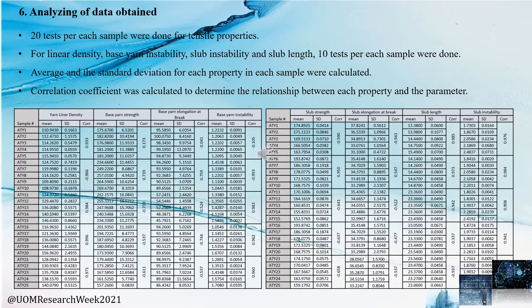To measure tensile properties, we conducted over 20 tests per each sample. For linear density, base instability, slab instability, and slab length, multiple tests per sample were also carried out. The average and standard deviation of each property were calculated, and the correlation coefficient was calculated to determine the relationship between each property and each parameter.